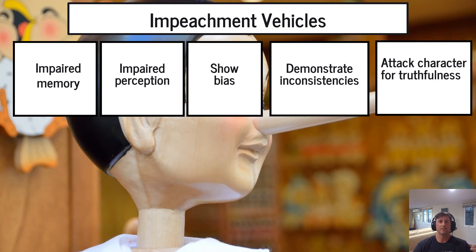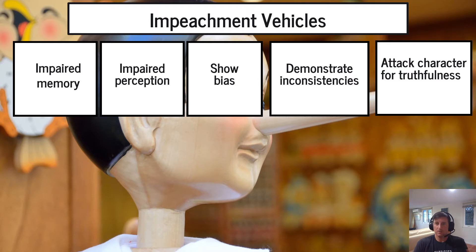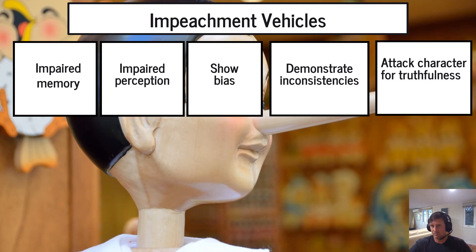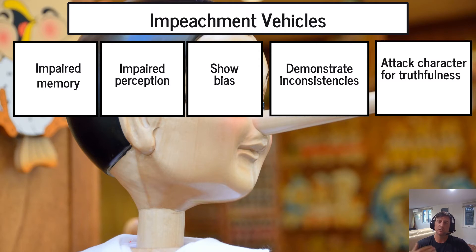Here are your impeachment vehicles. First, you can go into a witness's memory. If an event happened 20 years ago, you can ask: are you sure you remember it the way you're telling it today? For example, 20 years ago the witness said the person was wearing a green and yellow shirt; now at trial they say it was a red and blue shirt. You can explore that impaired memory to challenge their credibility.